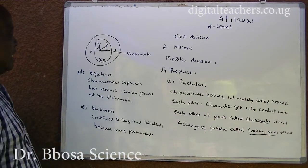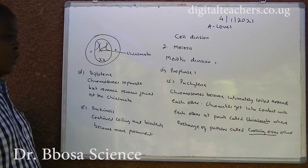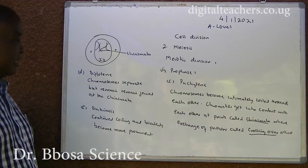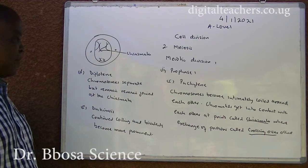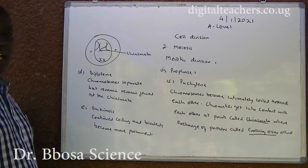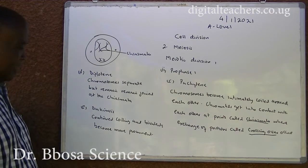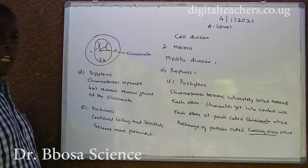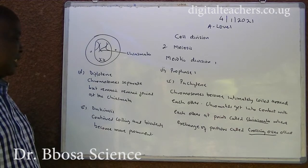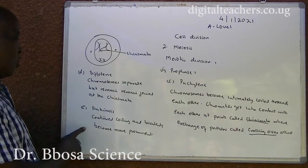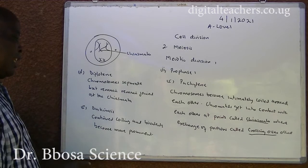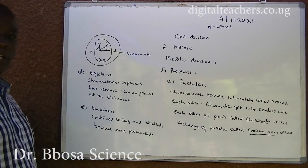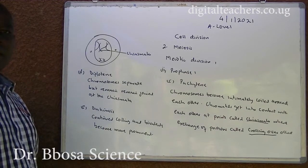In Diplotene, the paired chromosomes separate but remain joined at the chiasmata. In Diakinesis, continued coiling occurs and bivalents become more prominent.